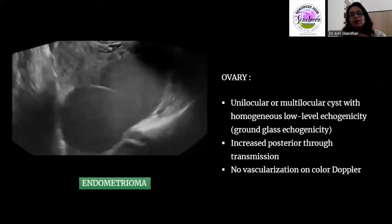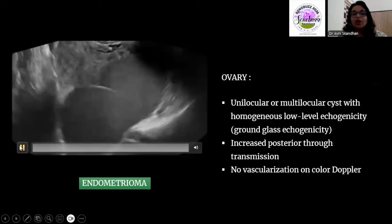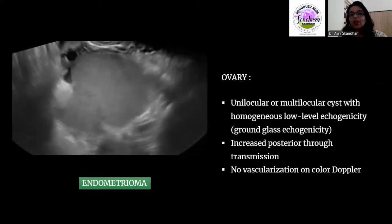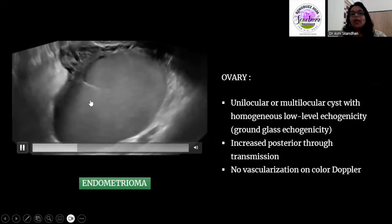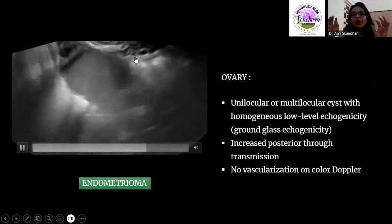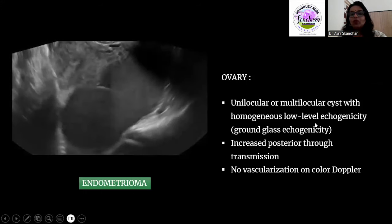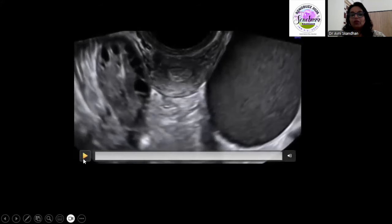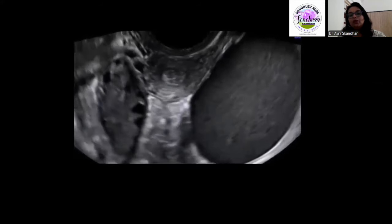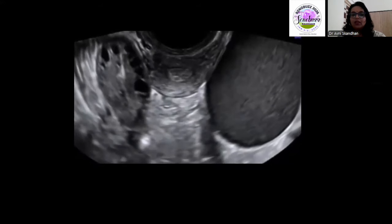Coming to the ovary, ovarian endometriosis or endometriomas are something we often encounter. We see classical unilocular or multilocular cystic areas with ground-glass contents that are very homogeneous, dense, and uniform. You might also see echogenic deposits along the walls suggestive of clots on the periphery. This is the classical ovarian endometrioma. After identifying it, we need to assess the mobility of the endometrioma, which I will elaborate on in a later part of the talk.